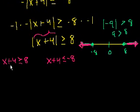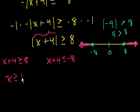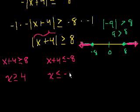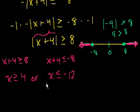Solving both cases: x plus 4 greater than or equal to 8 gives x greater than or equal to 4. And x plus 4 less than or equal to minus 8 gives x less than or equal to minus 12. So the solution is x greater than or equal to 4 or x less than or equal to minus 12, and that is choice D.